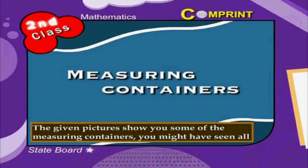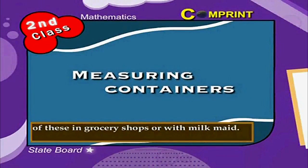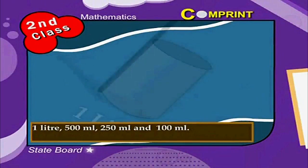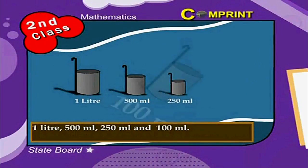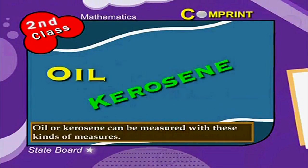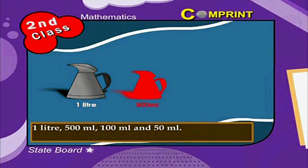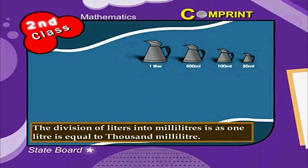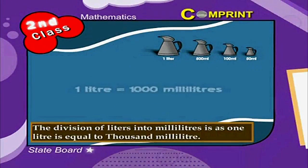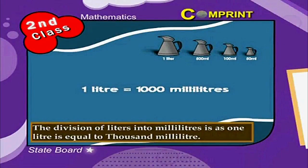The given pictures show some of the measuring containers you might have seen in grocery shops or with a milkmaid: 1 liter, 500 milliliters, 250 milliliters and 100 milliliters. Oil or kerosene can be measured with these kinds of containers: 1 liter, 500 milliliters, 100 milliliters and 50 milliliters. The division of liters into milliliters is as follows: 1 liter is equal to 1000 milliliters.